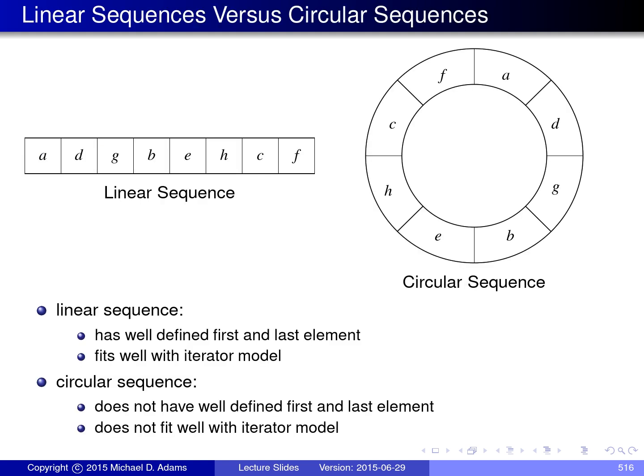In programming, we often have to deal with linear sequences of elements. And a linear sequence has the property that has a well-defined first and last element. So, for example, if you have a linear sequence, we can meaningfully talk about the first element, which in this case would be the element A, and the last element, which would be the element F.